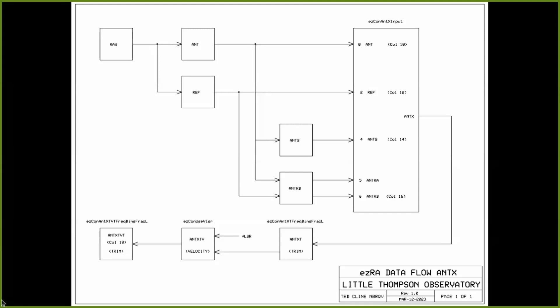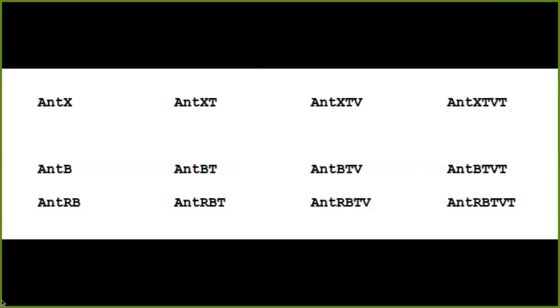So Ant-X-TVT is the output that goes into column 18 in the output file. So Ant-X-T is simply a form of post-processing after the original signals are created. We start with Ant-X, that's the mysterious one, becomes Ant-X-T, Ant-X-TV for velocity, Ant-X-TVT with another trim on the end.